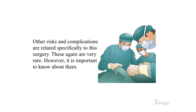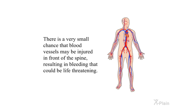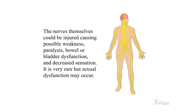Other risks and complications are related specifically to this surgery; these again are very rare, however it is important to know about them. Fluids may leak from around the nerves. There is a very small chance that blood vessels may be injured in front of the spine, resulting in bleeding that could be life-threatening. The bowels can also be injured in front of the spine. The nerves themselves could be injured, causing possible weakness, paralysis, bowel or bladder dysfunction, and decreased sensation. It is very rare, but sexual dysfunction may occur.